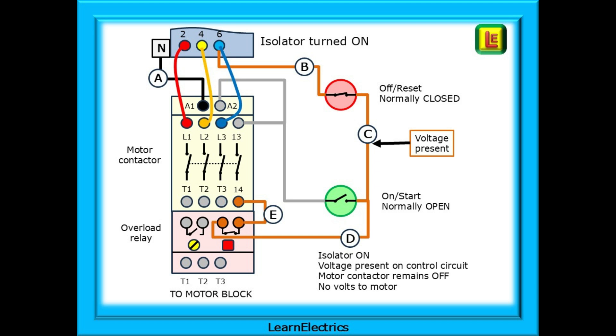A wire, labelled wire B, leaves the blue terminal of the isolator and is connected to the normally closed reset or off switch. This wire B is coloured brown to indicate that it has a voltage of 230 volts with reference to the neutral wire at A. 230 volts passes through the closed off switch and travels along wire C to one side of the on or start switch. The start switch is normally open, so voltage cannot pass through it. The 230 volts continues on its way along wire D to the normally closed contacts of the overload relay, through the relay onto wire E, and then to terminal number 14 of the motor contactor where it stops.